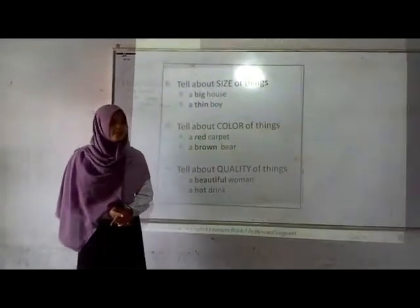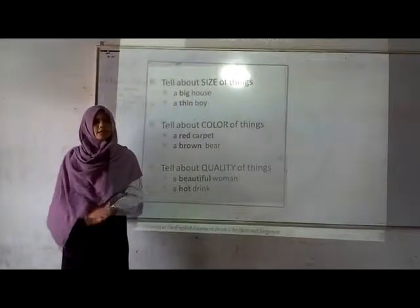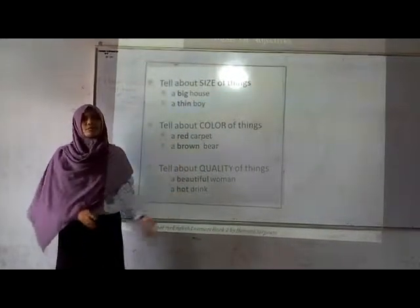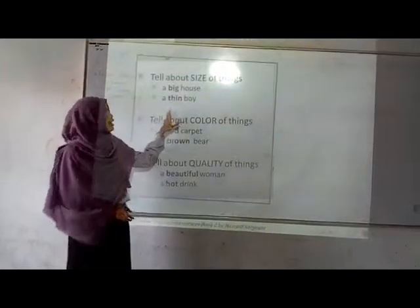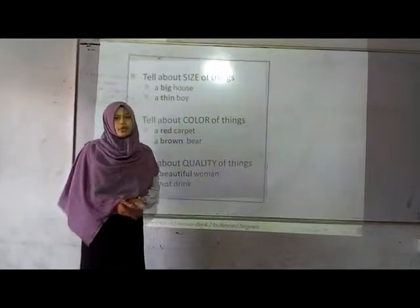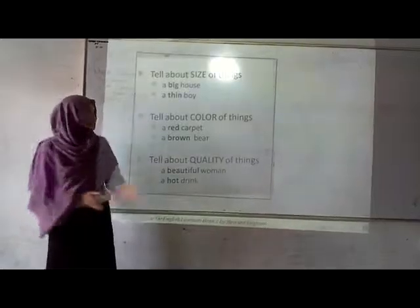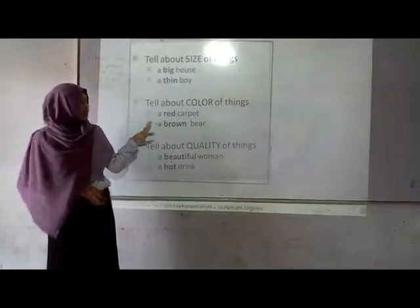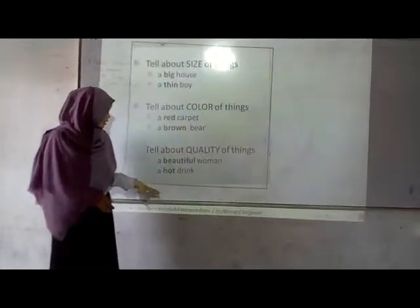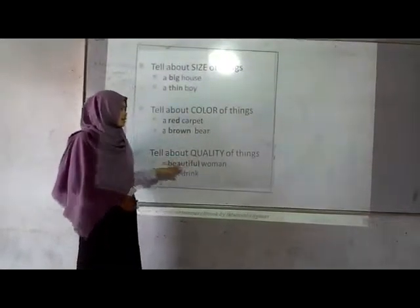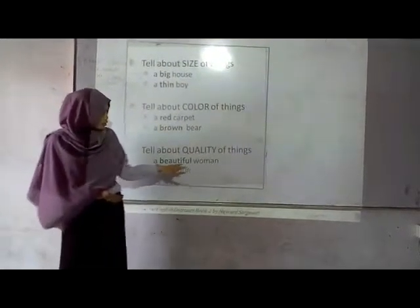Now we go to the first kind: size. Size is the adjective that tells us about the size of the thing. For example, a big house or a big boy. And the second is color — it tells us about what color the thing is. For example, a red carpet or a brown bear. And the third, the adjective tells us about the quality of the thing. For example, a beautiful woman.